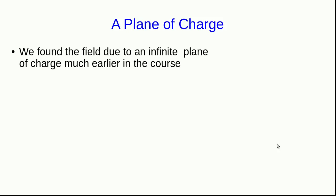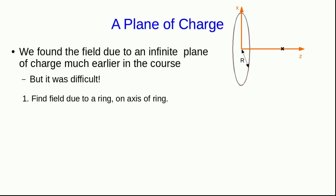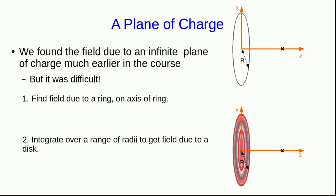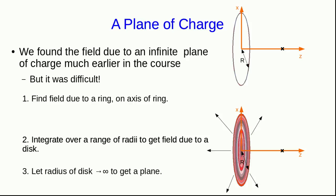Back in the electric fields unit of the course, we found the field due to an infinite plane of charge, but it was really difficult — so difficult that I put most of it into a supplementary lecture. We had to first find the field due to a ring on the axis, then integrate over a bunch of radii to get the field due to a disk, and finally allow the radius to go to infinity. That was a very long process, but Gauss's law can get it for us very quickly.